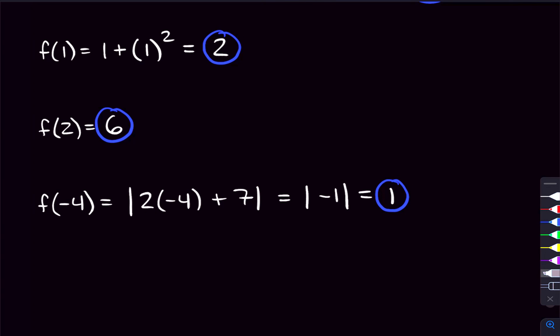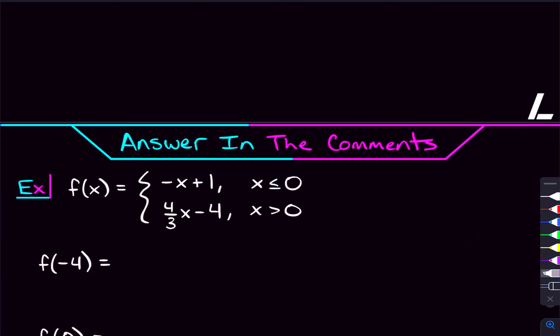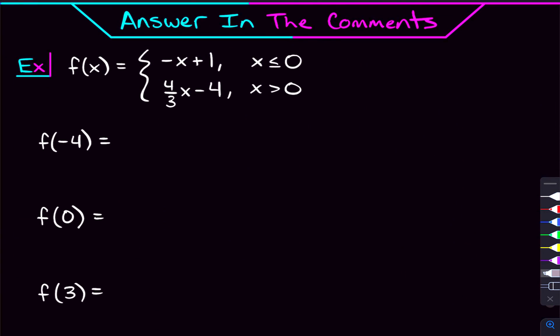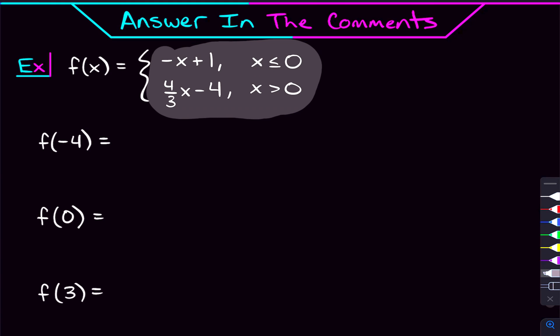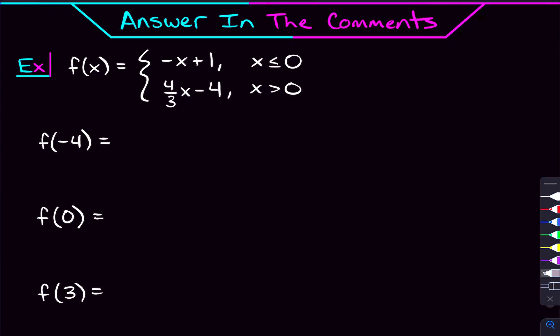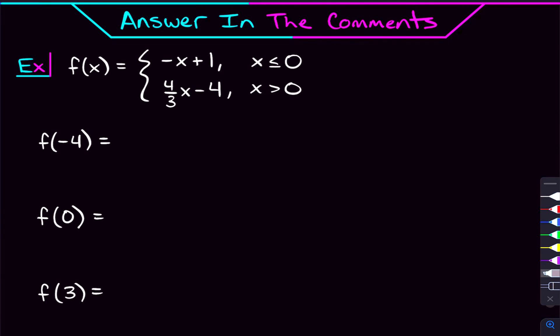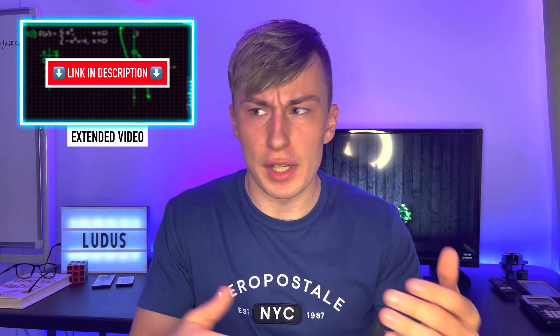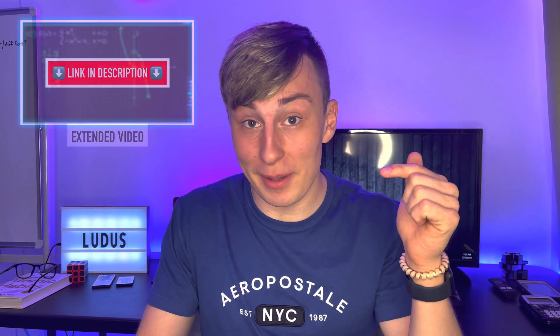So that is how to evaluate piecewise functions. If you feel pretty good with that, here is a problem to try and answer in the comments: I have a small piecewise function with two functions, and I'm asking for f of negative four, f of zero, and f of three. Let me know your answers in the comments. If you have any questions, let me know and I'll try to get back to you. I also have that extra video for four more evaluating piecewise functions problems plus eight graphing problems — check out the link in the description if you have a quiz or test coming up.